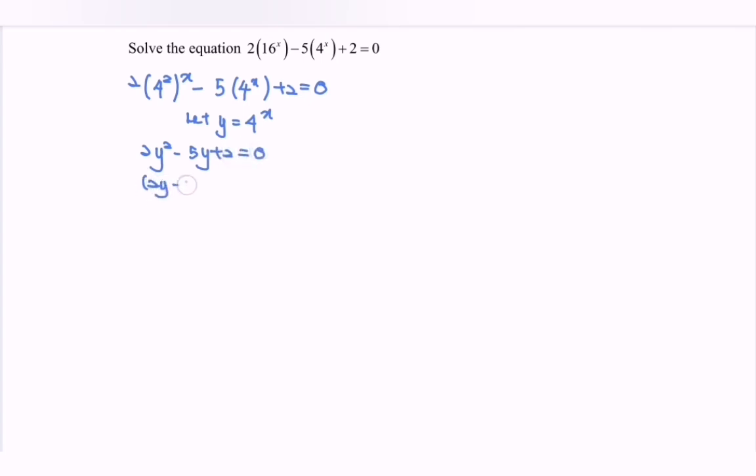So we have 2y minus 1 times y minus 2. So we have 4 to the power of x which is equal to 1 over 2, and 4 to the power of x is equal to 2.